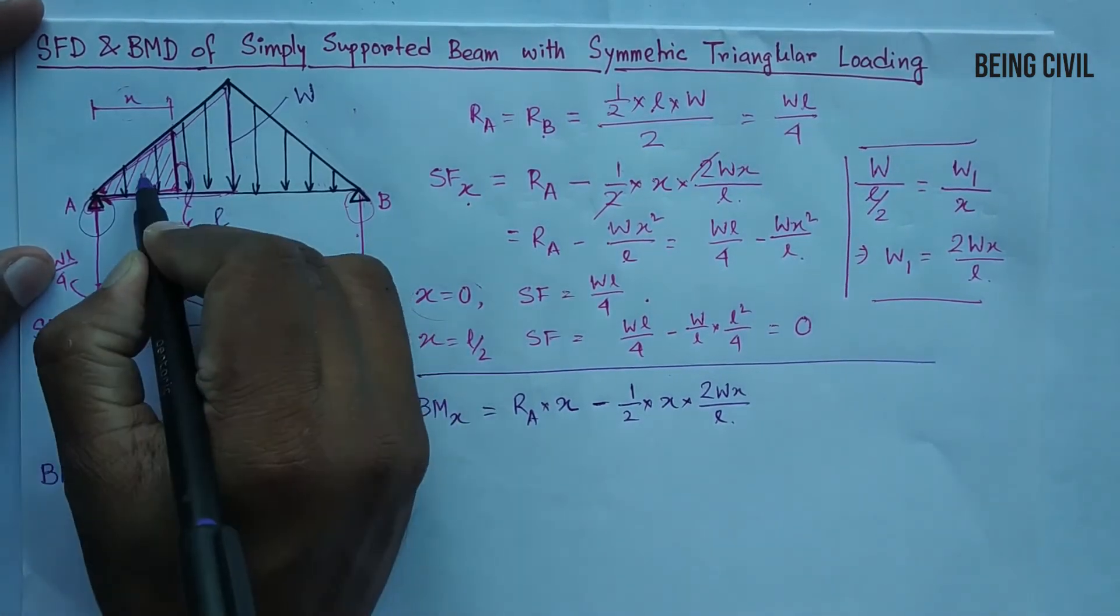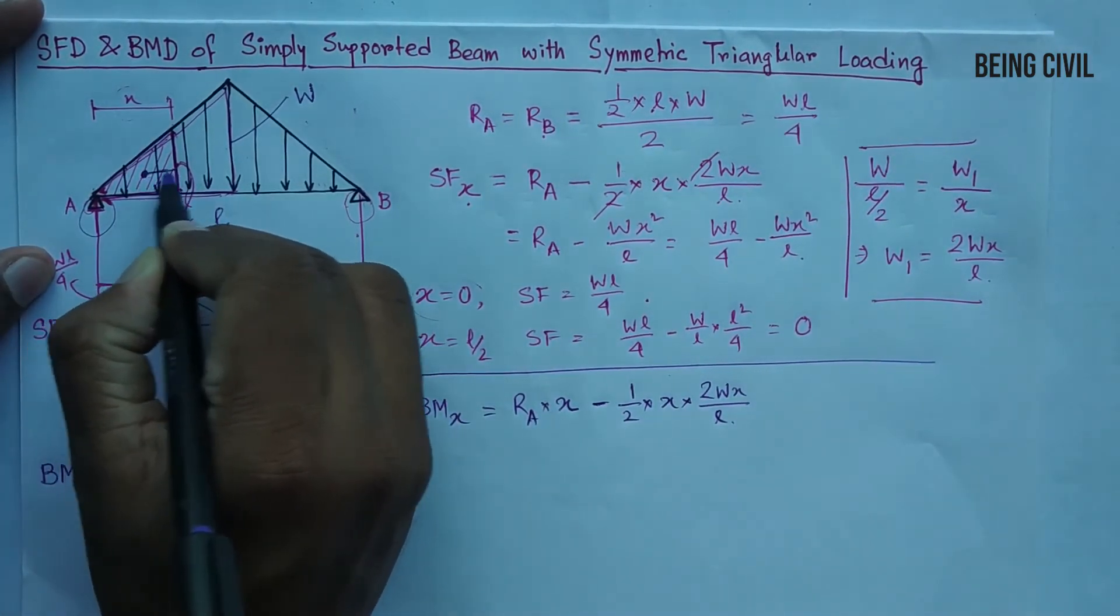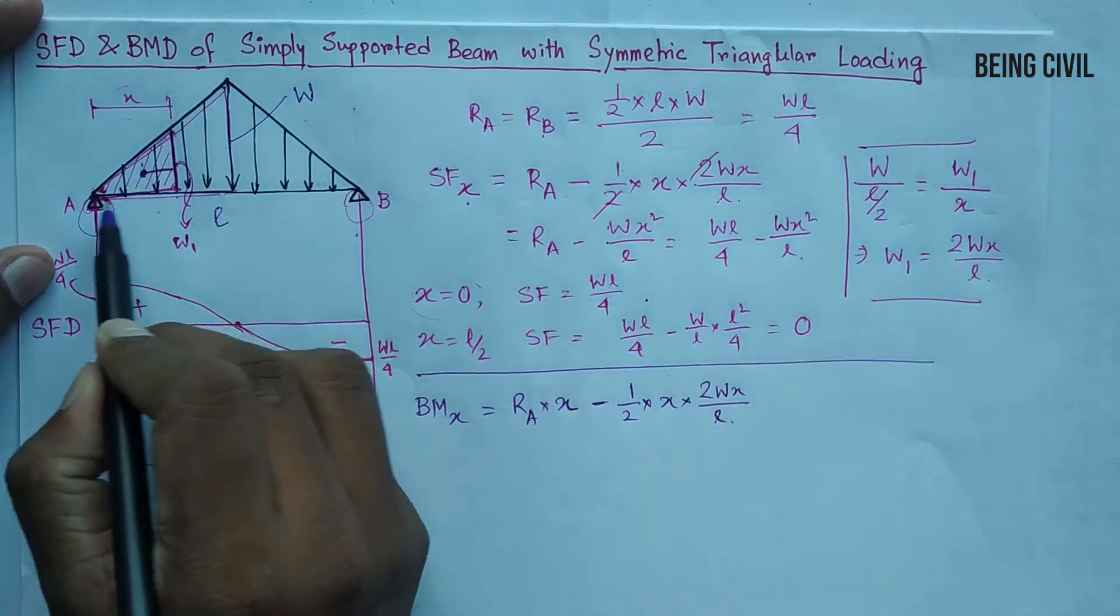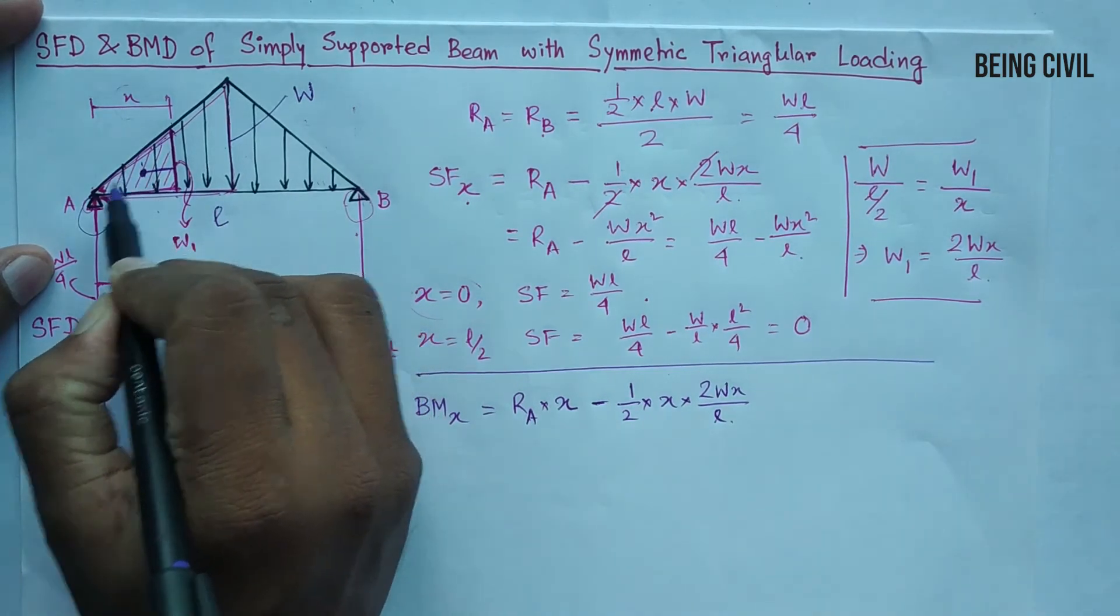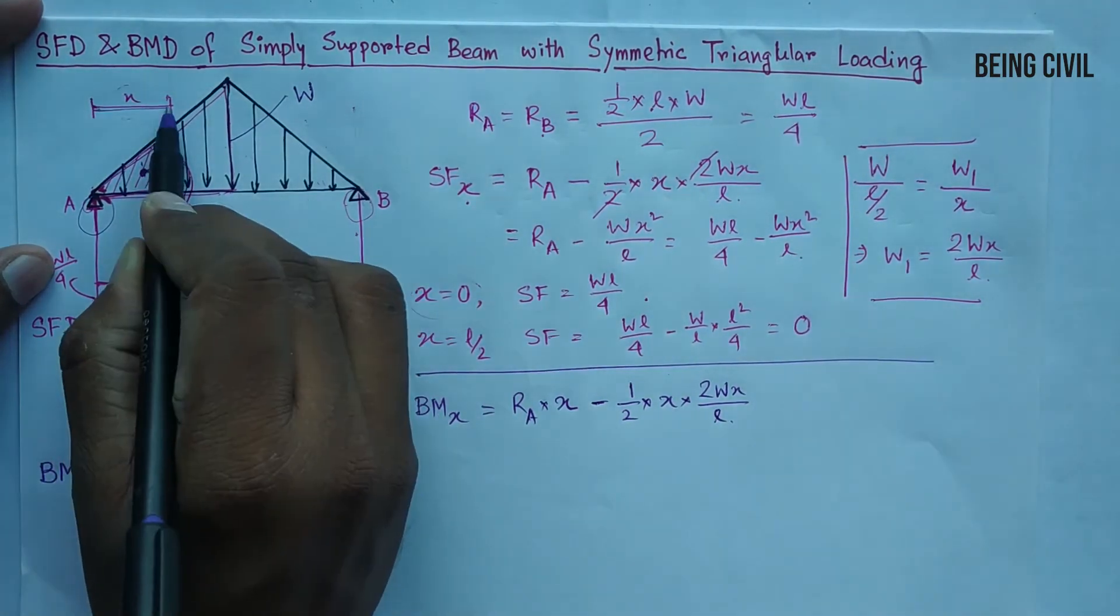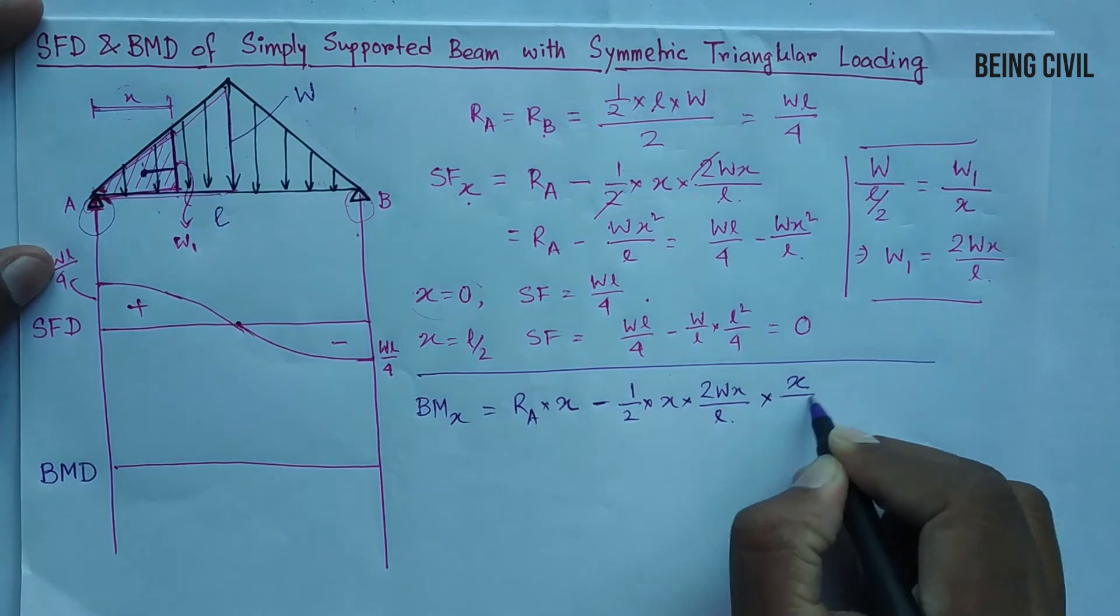And if you have to calculate the distance of CG of the load from this section, you know that at CG the distance always divides in 2 is to 1 ratio, so this distance will be x by 3.